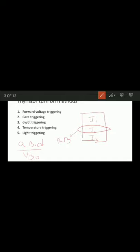At VBO, the thyristor changes from off-state to on-state, characterized by low voltage across the thyristor with large forward current. Since J1 and J3 are already forward biased, breakdown of J2 allows free movement of carriers across the junctions, resulting in a large forward anode current. After avalanche breakdown, J2 loses its reverse blocking capability. If the anode voltage is reduced below VBO, the SCR will continue conducting, and can only be turned off by reducing anode current below the holding current.